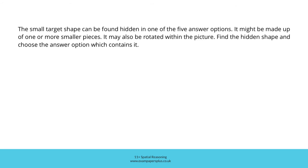The small target shape can be found hidden in one of the five answer options. It might be made up of one or more smaller pieces. It may also be rotated within the picture. Find the hidden shape and choose the answer option which contains it.